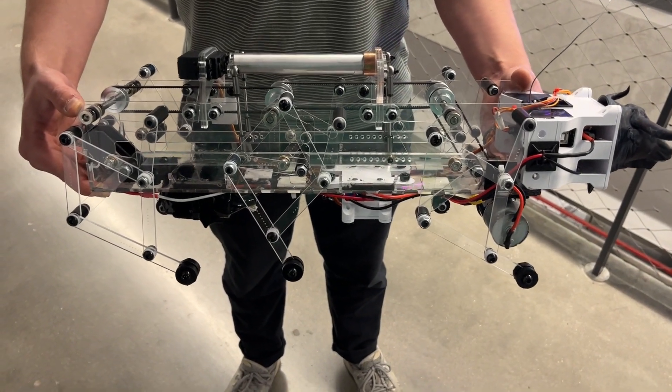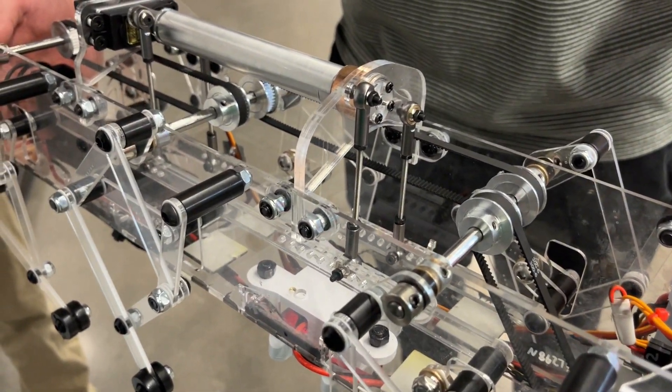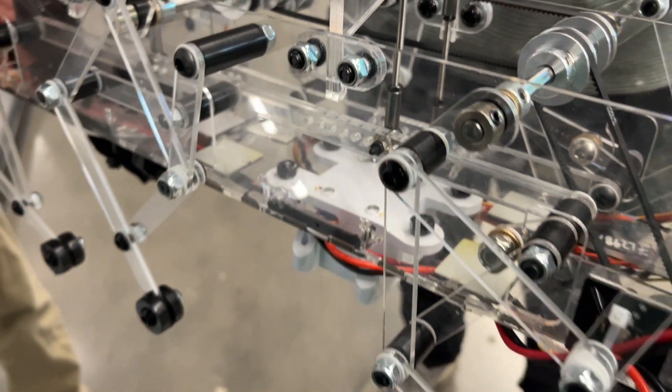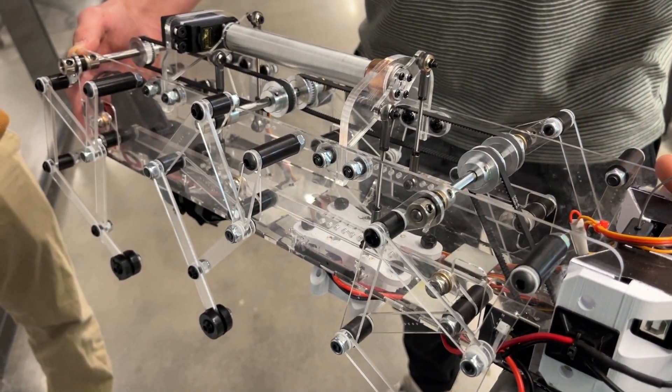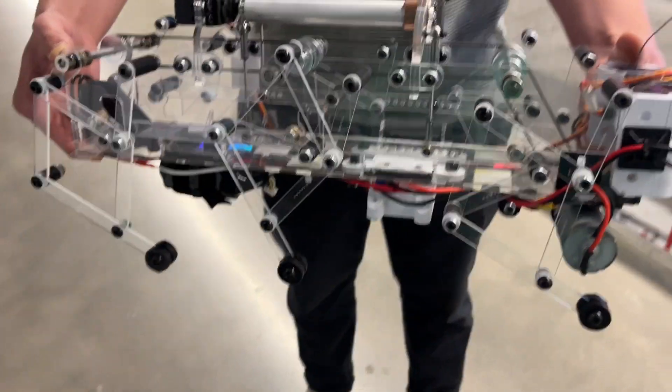Alright, so here's our robot. Notice that when we turn our remote here, we get actuation on this ball joint fixture to move our six bars. And that'll change our gaits on our legs.